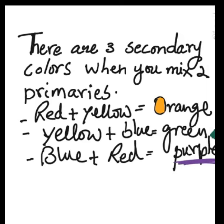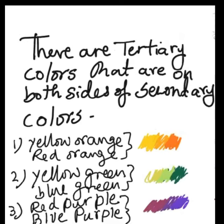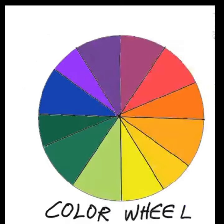There are three secondary colors, which can be made by mixing any two primaries. There are three sets of tertiary colors; these colors are on both sides of the secondary colors. This is the color wheel with 12 colors, including primary, secondary, and tertiary colors.